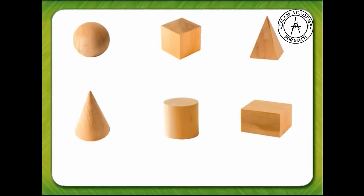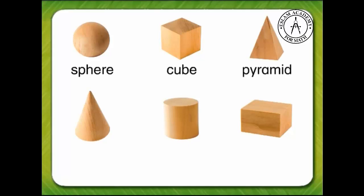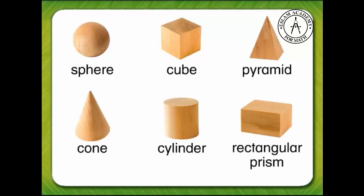Let's name each figure. This three-dimensional figure is a sphere. This figure is a cube. Here is a pyramid. If you like ice cream, you may know the name of this three-dimensional figure — cone. This three-dimensional figure is a cylinder. Our final three-dimensional figure has two words: Rectangular Prism.